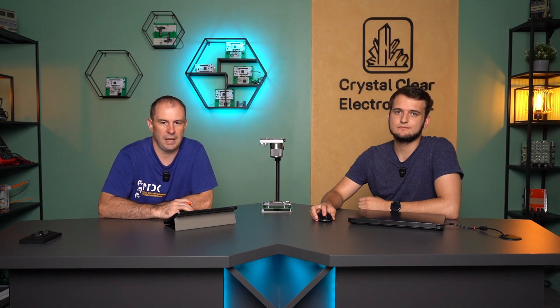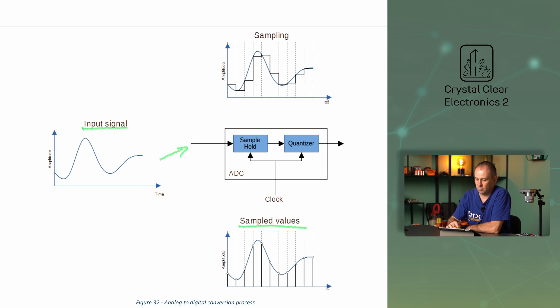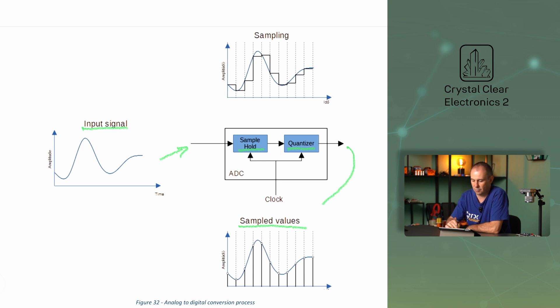There are many types of such devices, depending on their accuracy, speed, and the way they work. We don't need to know much about the construction of these converters, just the basics of how they work. The AD converter can convert the incoming signal into a digital signal that the controller can easily handle. The conversion process can be followed as shown in the figure. The input continuous voltage is sampled by the microcontroller at equal intervals, and then the sampled amplitude value is quantized to determine the corresponding digital value.